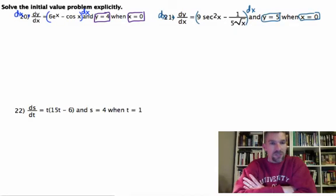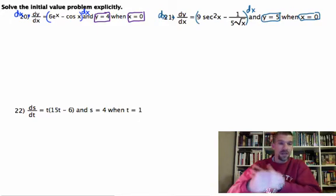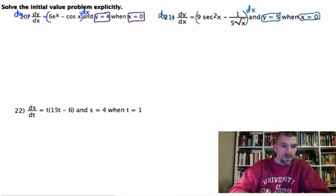Last one of the explicit initial value problems that involve differential equations. Just like all the other ones, we're going to dive on into this guy by multiplying everything by dt. We want to get rid of the fraction on the left, so we're going to multiply everything by dt.